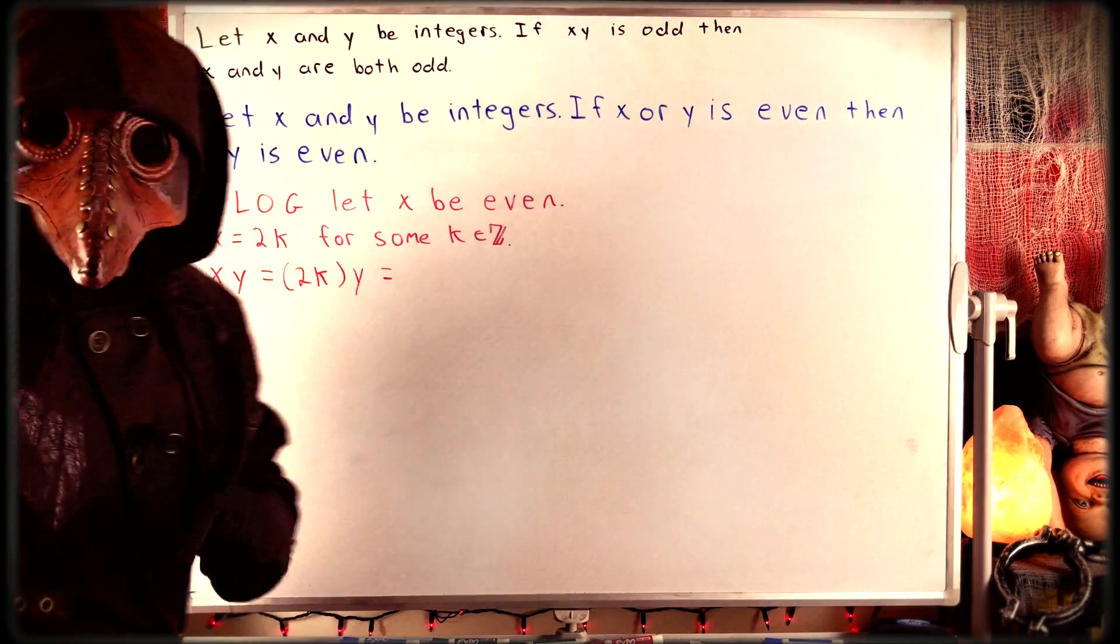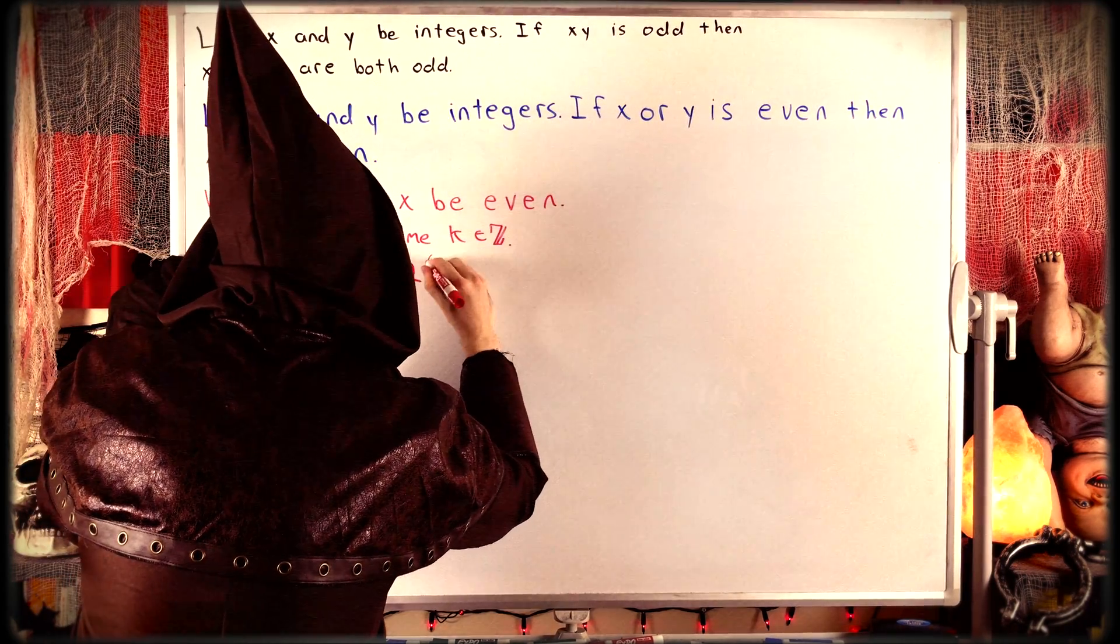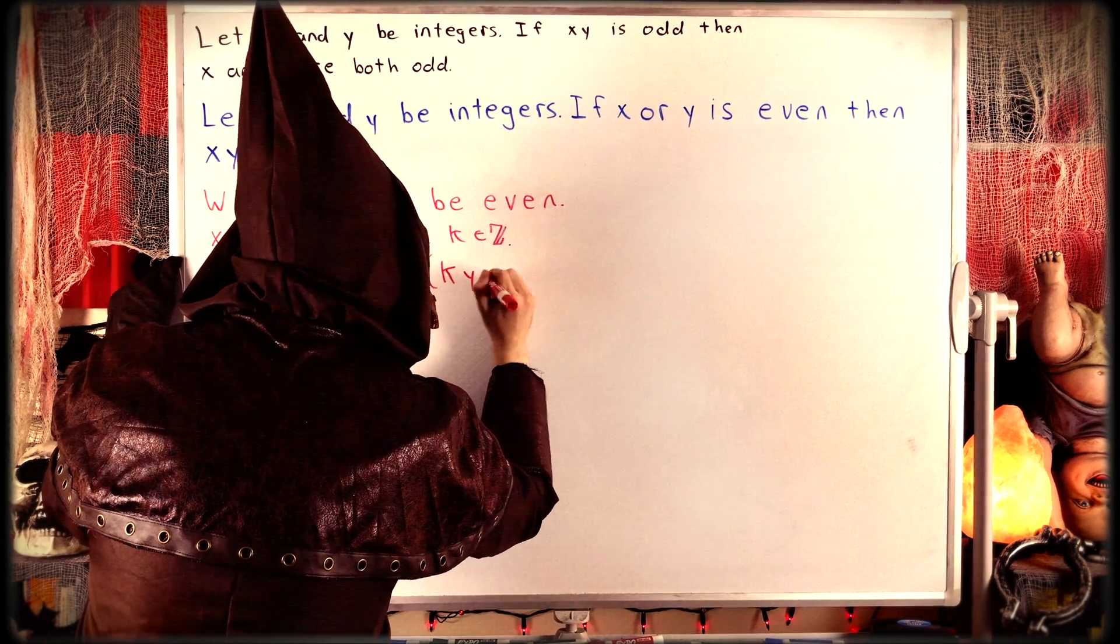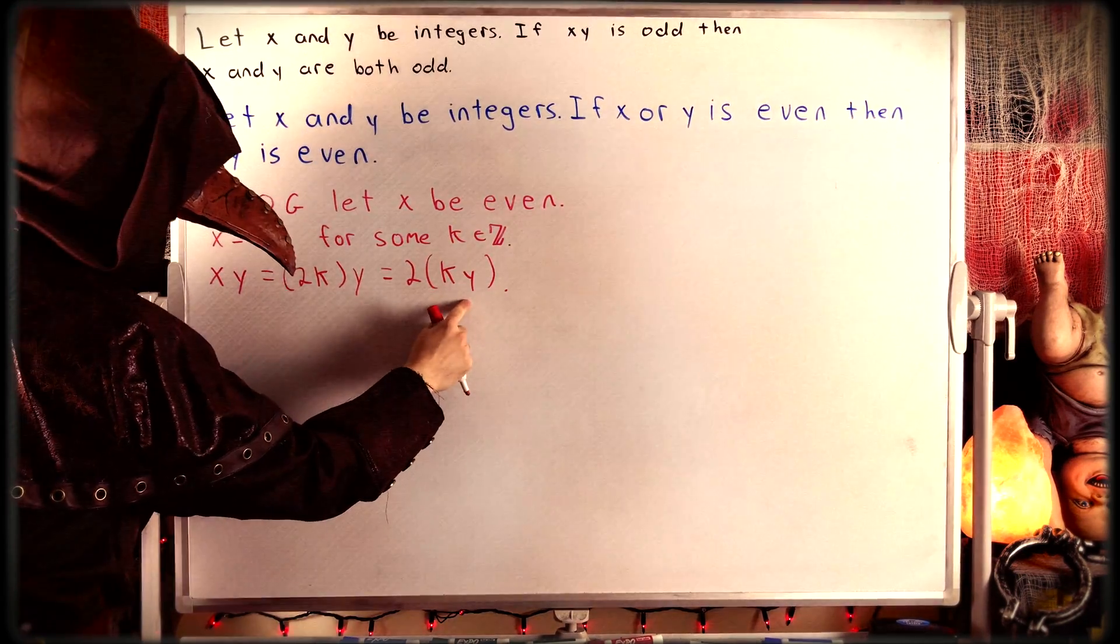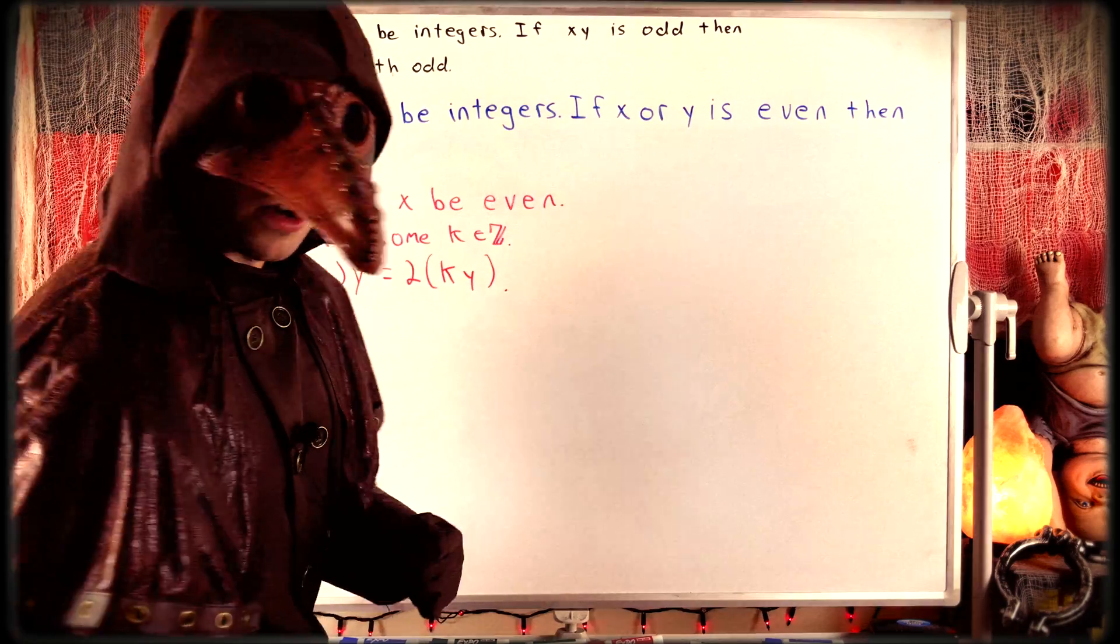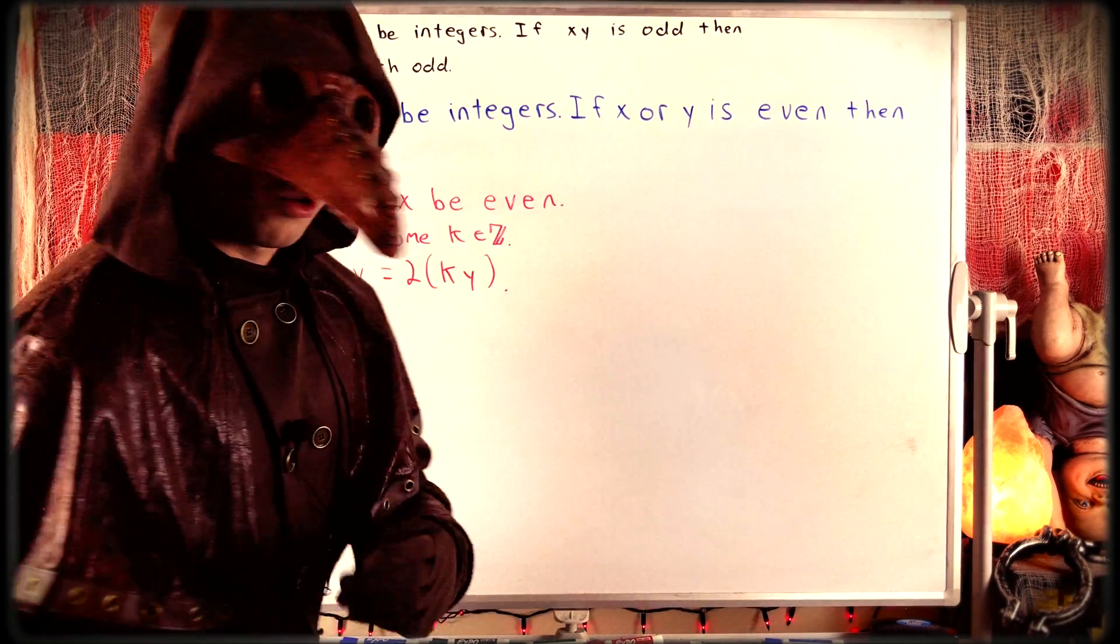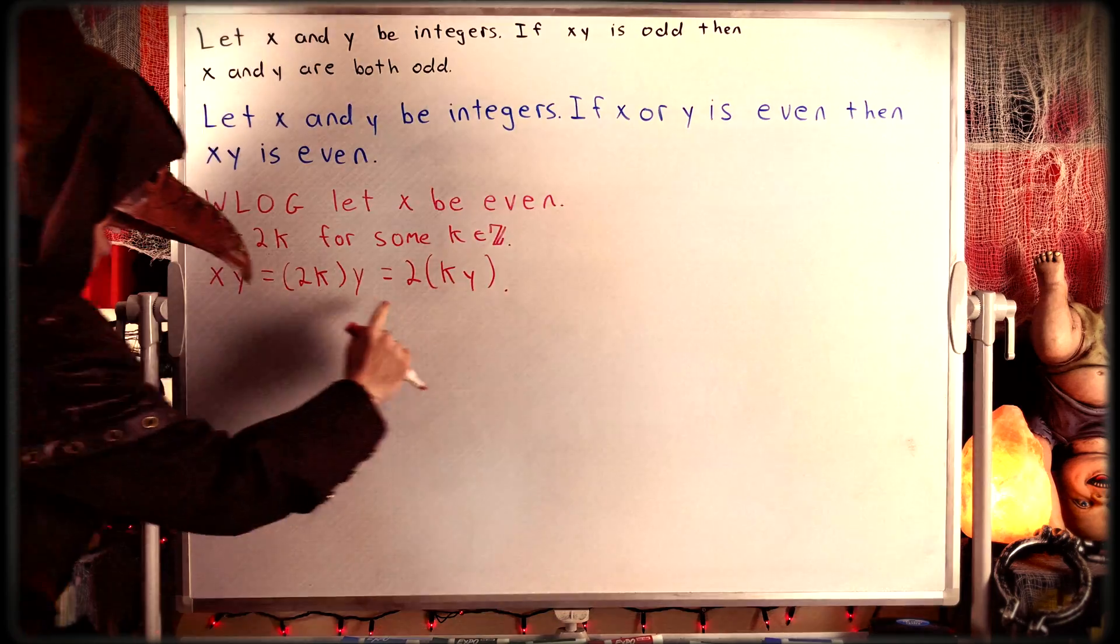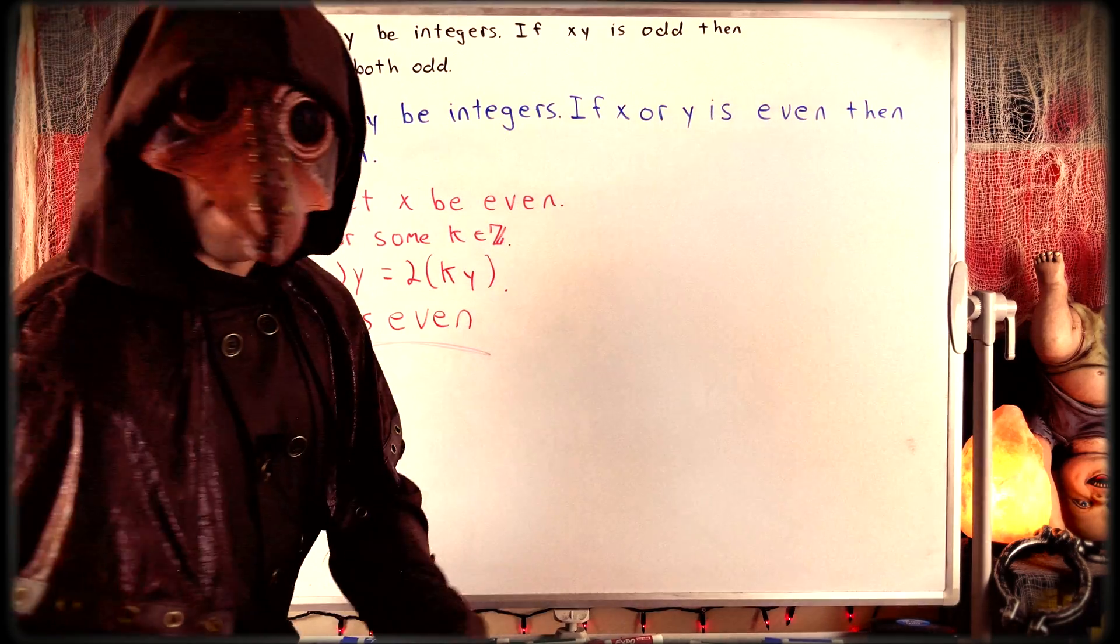Then, multiplication is associative, so 2k times y is equal to 2 times ky. And now we're basically done. k and y are both integers. The integers are closed under multiplication, so k times y is also an integer. Thus, xy is an integer multiple of 2, hence xy is even. And that's it. That's the end of the proof.